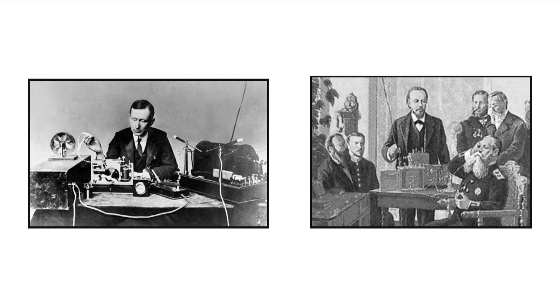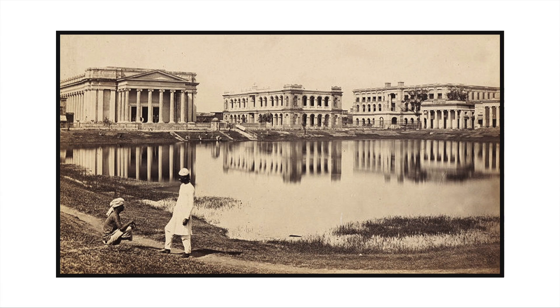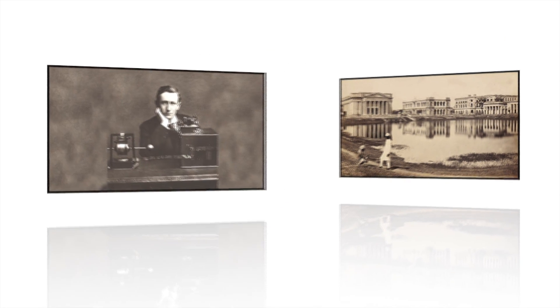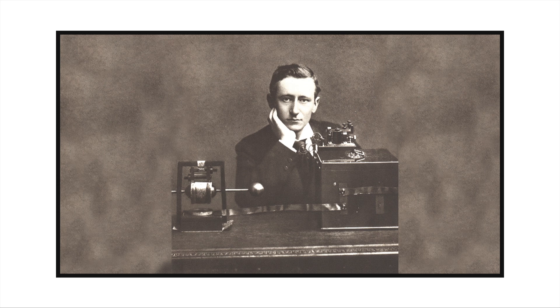Marconi in England and Popov in Russia were conducting similar experiments at that time to demonstrate wireless signaling. But their experiments were at much lower frequencies. In 1895, public demonstration by Bose in Calcutta predates similar demonstrations of wireless or remote signaling by Marconi in 1897.